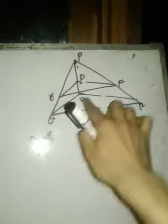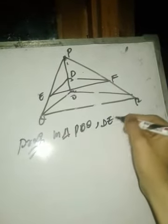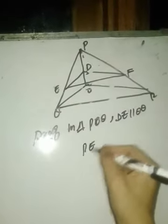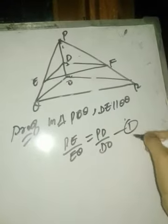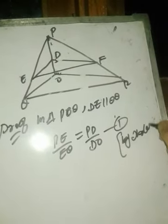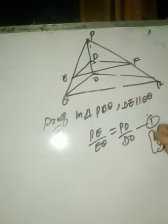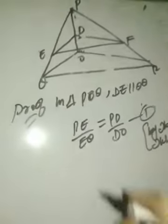Let us write the proof. In triangle POQ, DE is parallel to OQ — this is given. So by Thales' theorem, we can write PE/EQ = PD/DO. Name this equation (1). The reason is Thales' theorem: if a line is drawn parallel to any side of a triangle, the other two sides are divided in the same ratio. I recommend writing the complete statement in your examination, not just 'Thales' theorem,' otherwise you will get fewer marks.